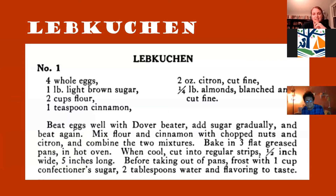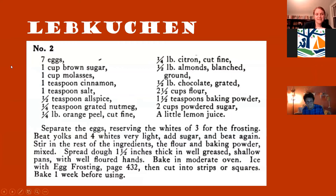Lebkuchen is a little bit different from what we consider gingerbread in the United States. This is an older recipe from the Selman cookbook — you can tell it's older because it just has cinnamon and citron and almonds. This second recipe is much more complicated and much more recent because it has spices: it's got molasses from the Americas, allspice, nutmeg, and chocolate — all of which would have been 1600s and later — which I find very interesting.